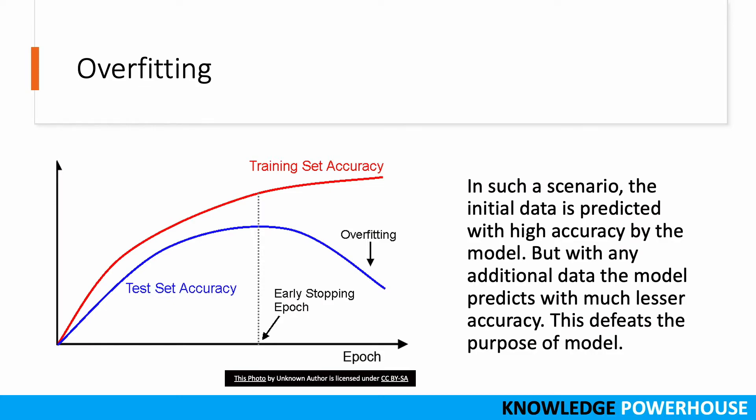In real scenarios the model is not able to predict well. When our model predicts with lesser accuracy on new data, we are observing overfitting, and this defeats the purpose of the model.